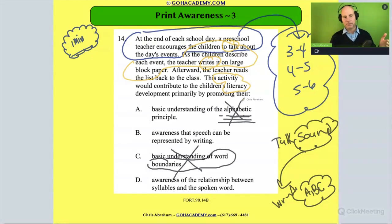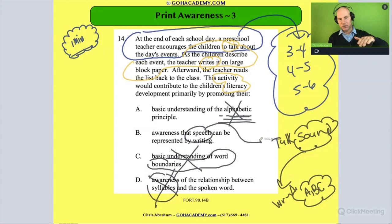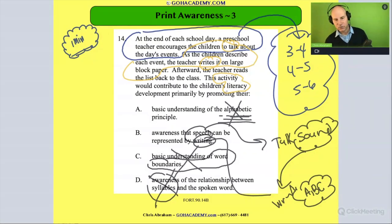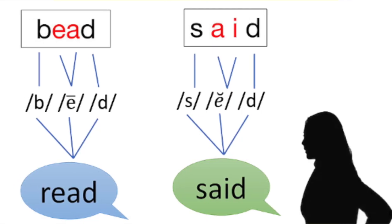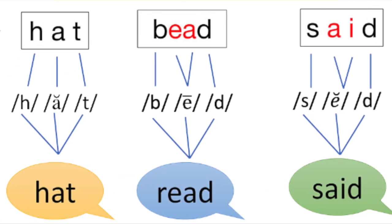So the alphabetical principle is out. Is it B or D? Option D is an awareness of syllables — I don't think that's it either. What we're doing here is building an awareness that speech — the talking — can be represented in writing. That's what the teacher is doing. If you do this activity every day in preschool, you're reinforcing print awareness: the understanding that everyday oral language and spoken words can be represented in writing.